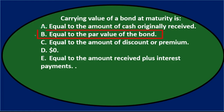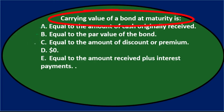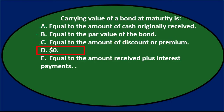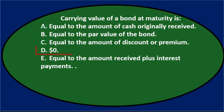Option B says equal to the par value of the bond — that's possible, so I'll keep that for now. Option C says equal to the amount of discount or premium — the carrying value wouldn't equal just the premium or discount, so that's not it. Option D says zero — at maturity you might think it should be zero, so I'll keep that. Option E says equal to the amount received plus interest payments — that could sound like something, so let's consider it further.